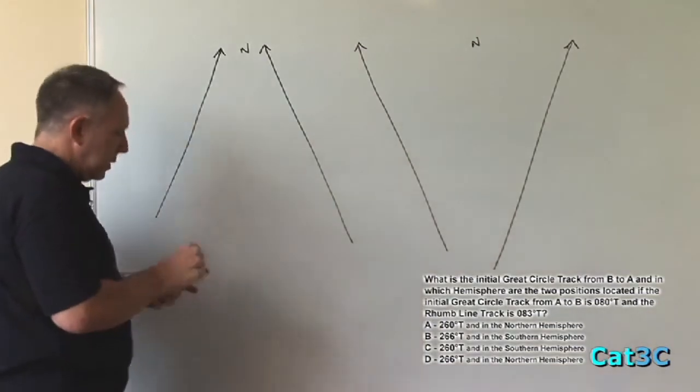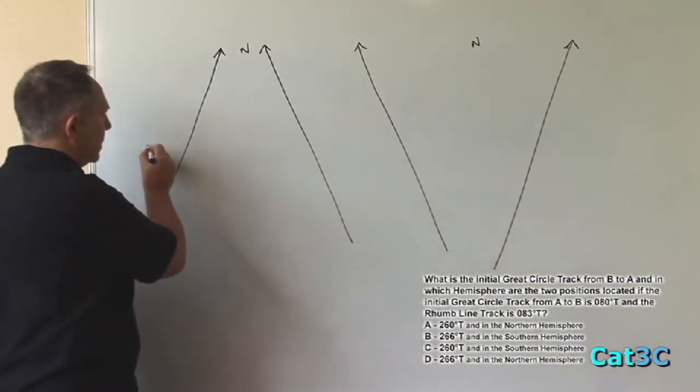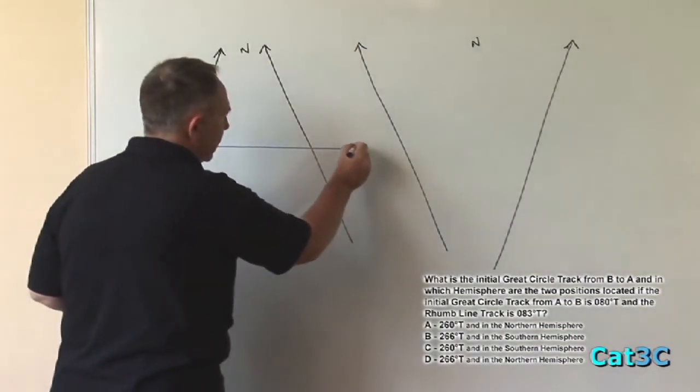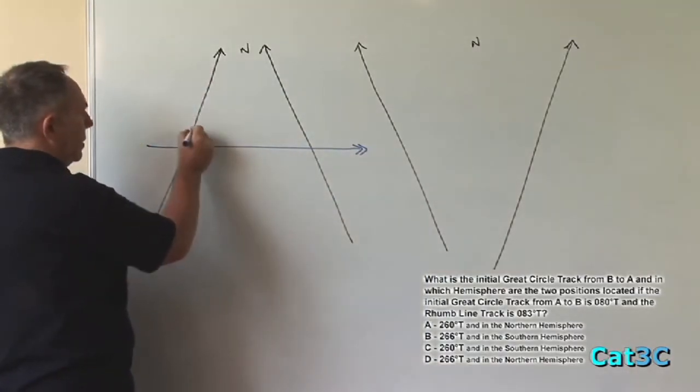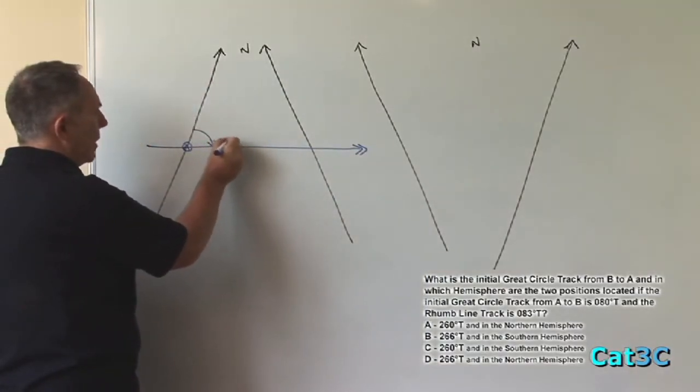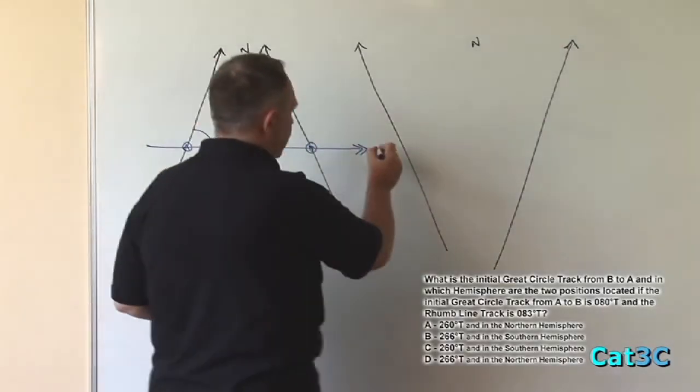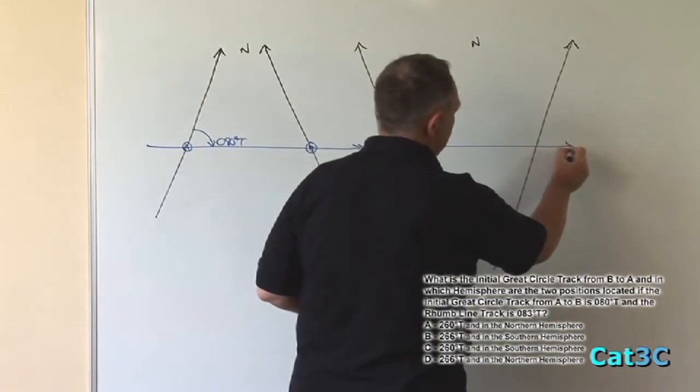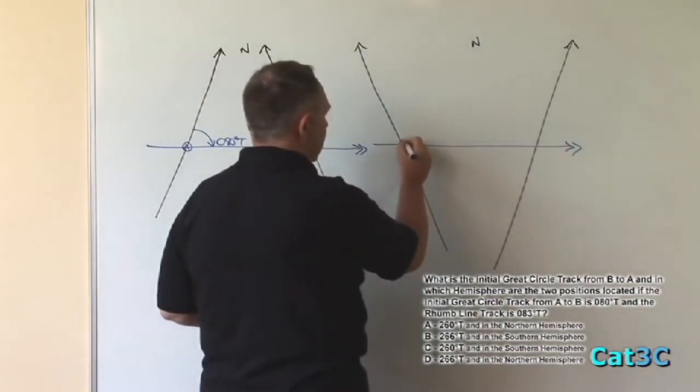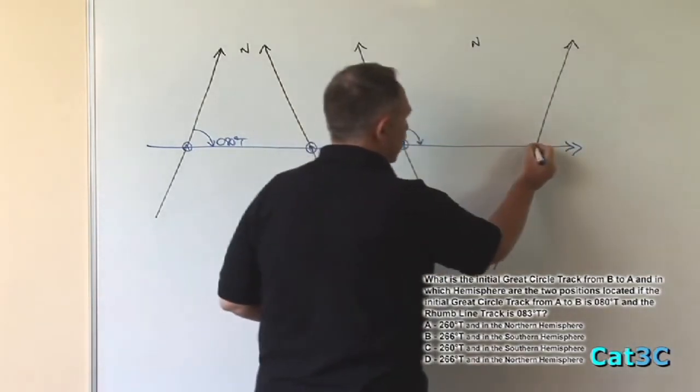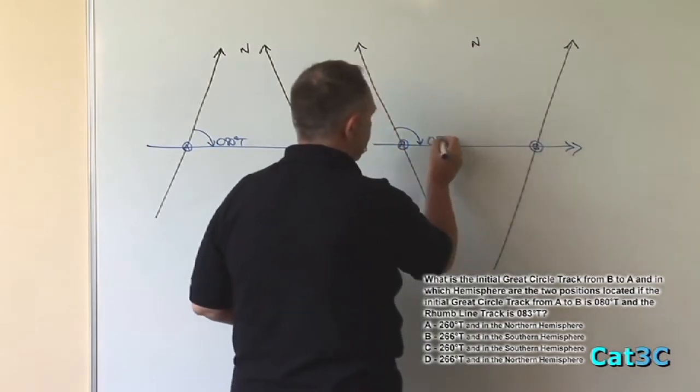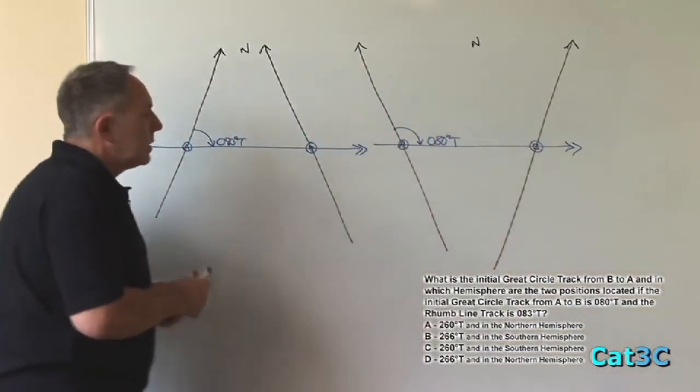The track line goes across from West to East because we're told that at A, the great circle track is 080 degrees true. Do the same for the Southern Hemisphere.